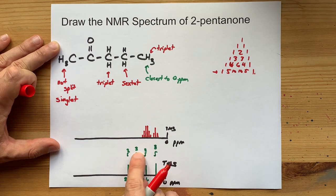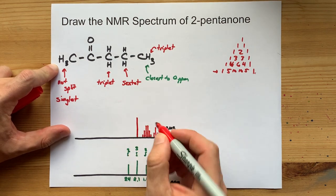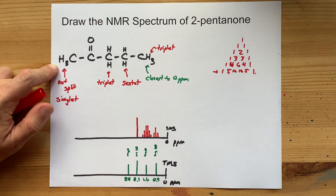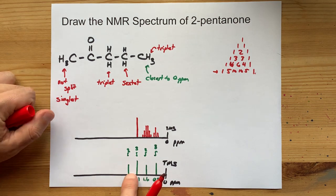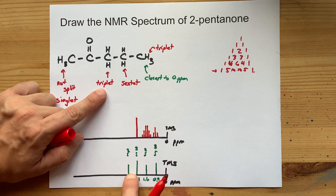Next, I have these three hydrogens here, which apparently are not split at all. So I'll just keep that as one tall peak. It's a singlet.